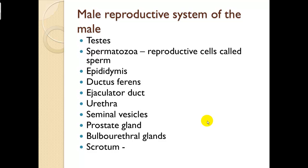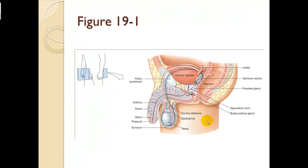Male reproductive system. The components include testes, spermatozoa, epididymis, ductus deferens, ejaculatory duct, urethra, seminal vesicles, prostate gland, bulbourethral gland, and the scrotum. Here is a quick overview: the urinary bladder from the previous chapter, the testes, epididymis, and the ductus deferens. Semen travels until it reaches the seminal vesicles, and the urethra serves both the urinary tract and seminal vesicles. We also have an ejaculatory duct, bulbourethral gland, scrotum sac, penis, and urethra, which houses both urine and reproductive secretions in the male.